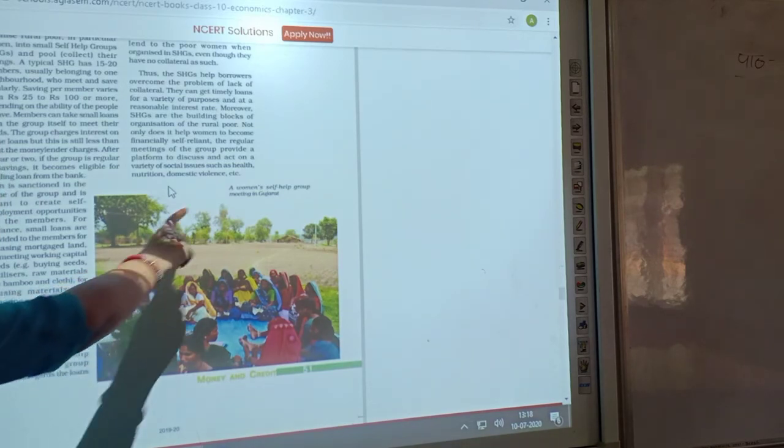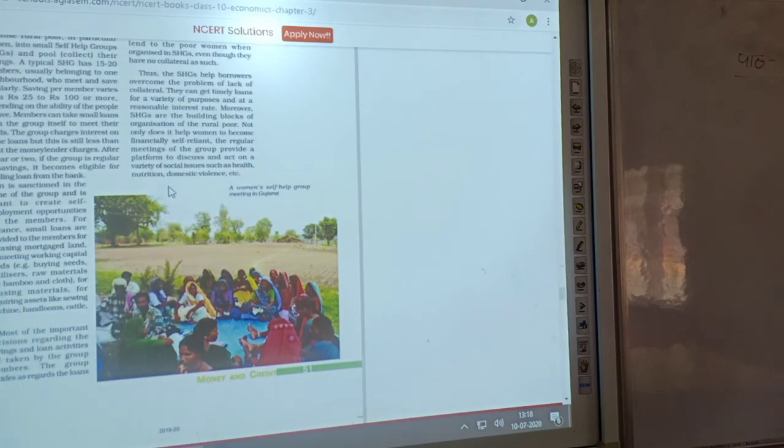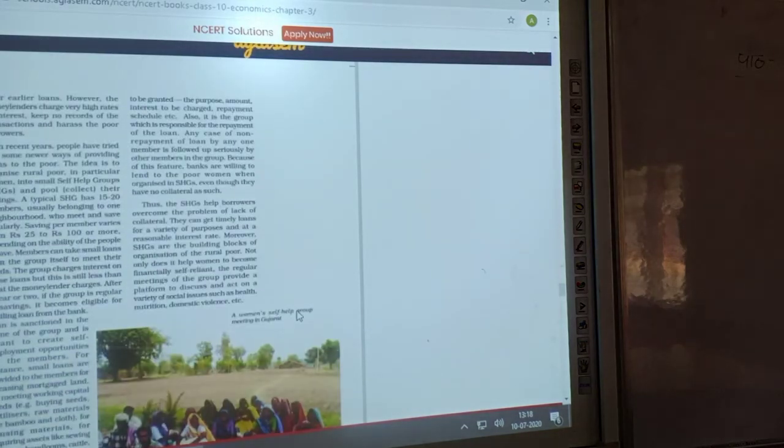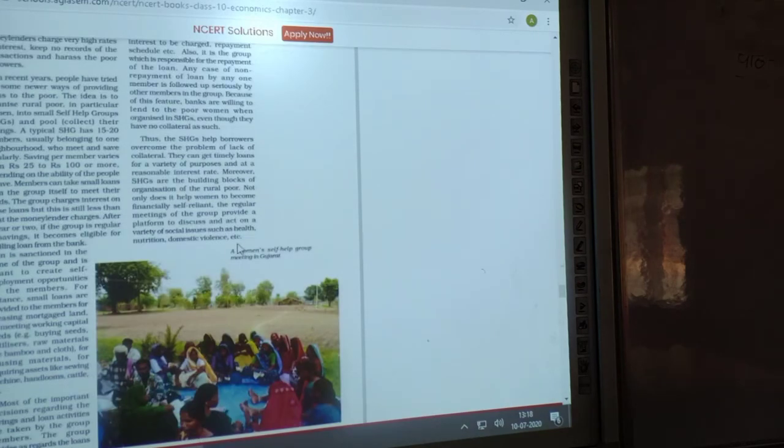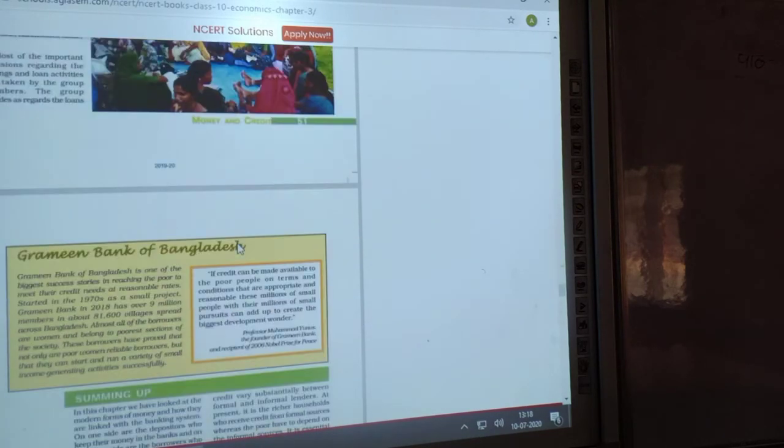So one example is given here. A women self-help group meeting in Punjab. And you can see in this picture it is given, the people are sitting together, they are discussing their problem and try to help each other by resolving issues. I hope this is clear to you all.